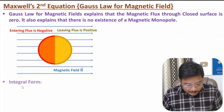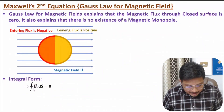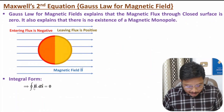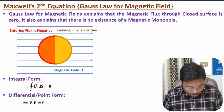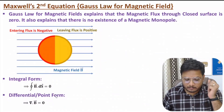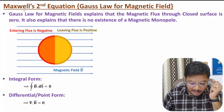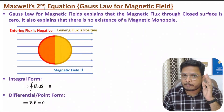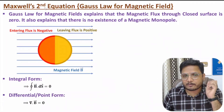In integral form, for a closed surface, magnetic flux is zero, meaning the closed surface integral of B·dS equals zero. In differential form, or point form, the divergence of magnetic field B is zero. That is Maxwell's second equation, and it is also applicable to non-time varying field.